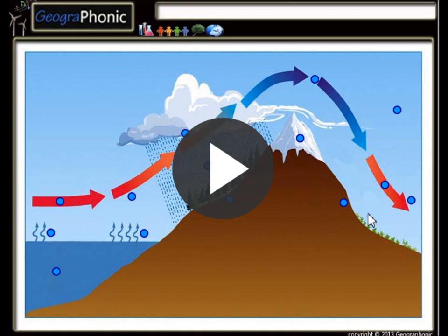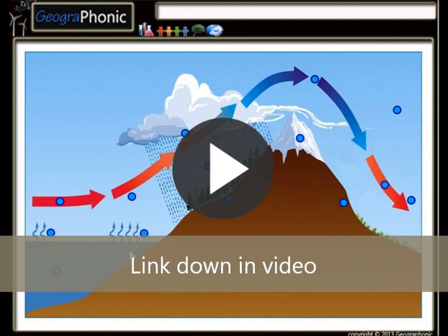On the other side of the mountain, we see a rain shadow area in which mostly deserts are found. For example, we can see this in California.